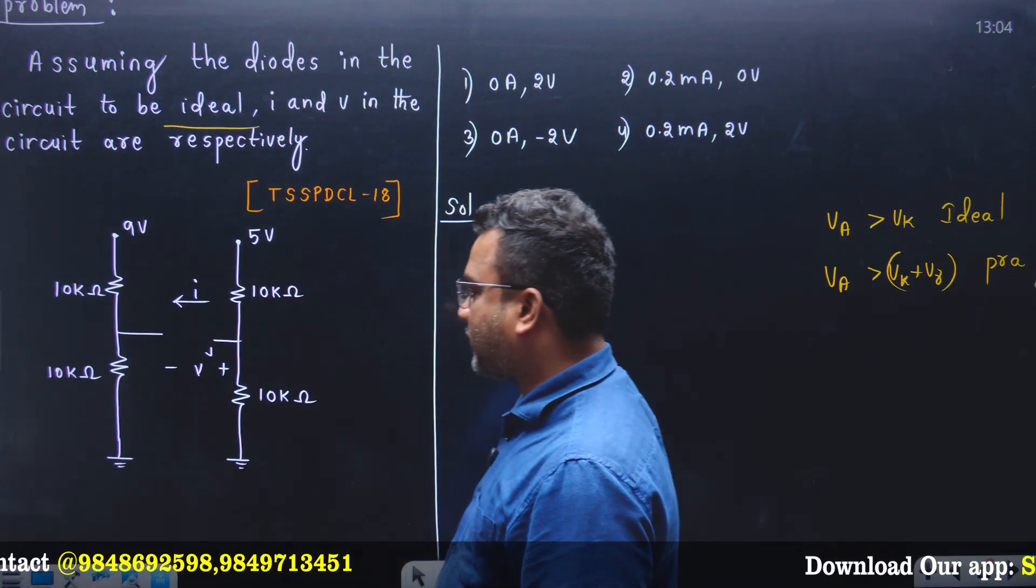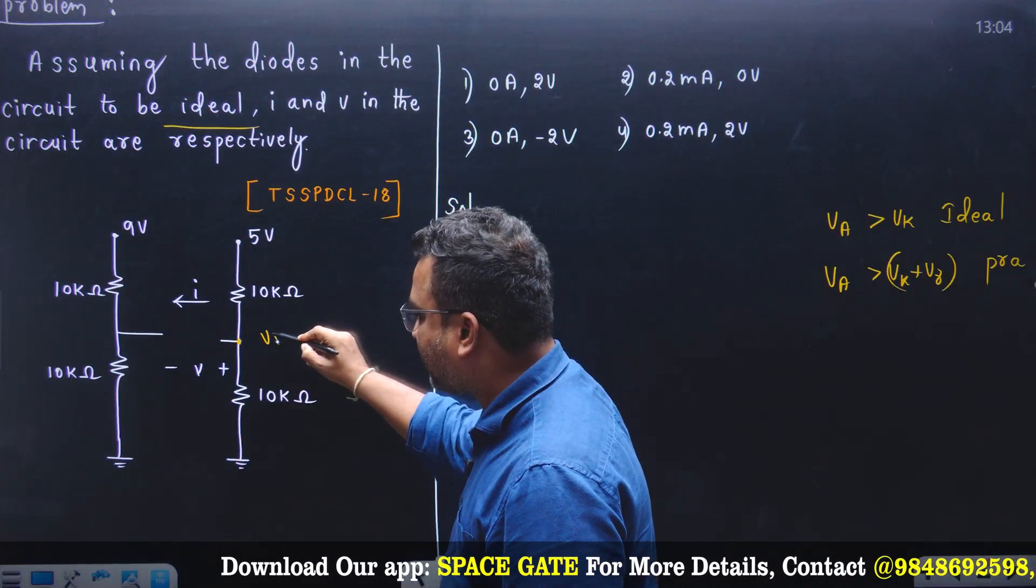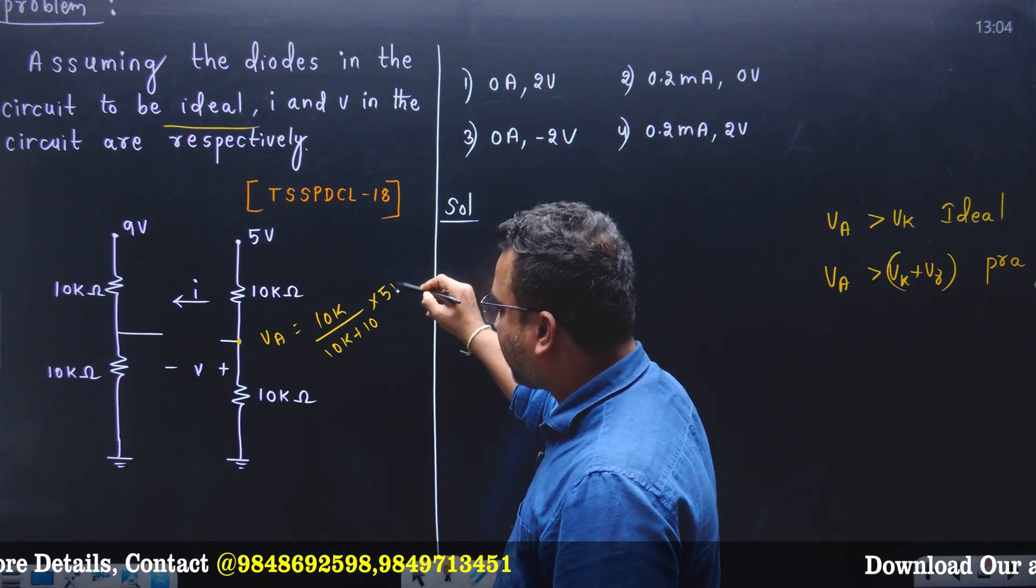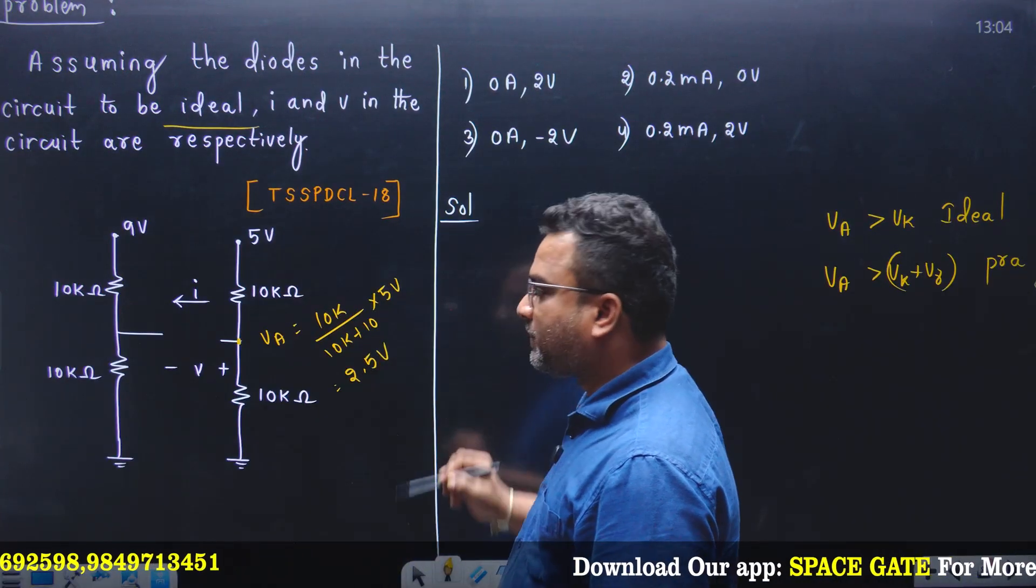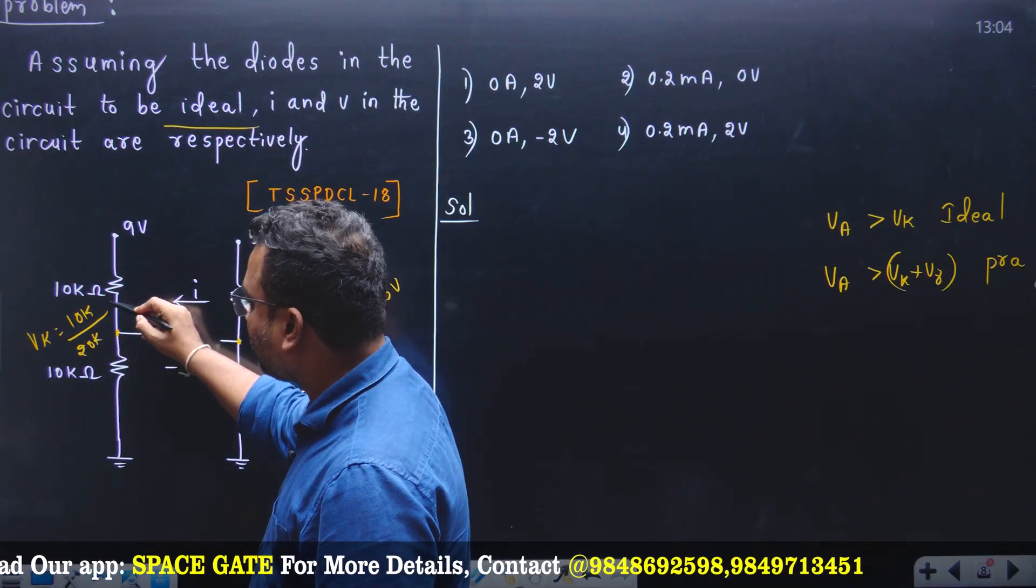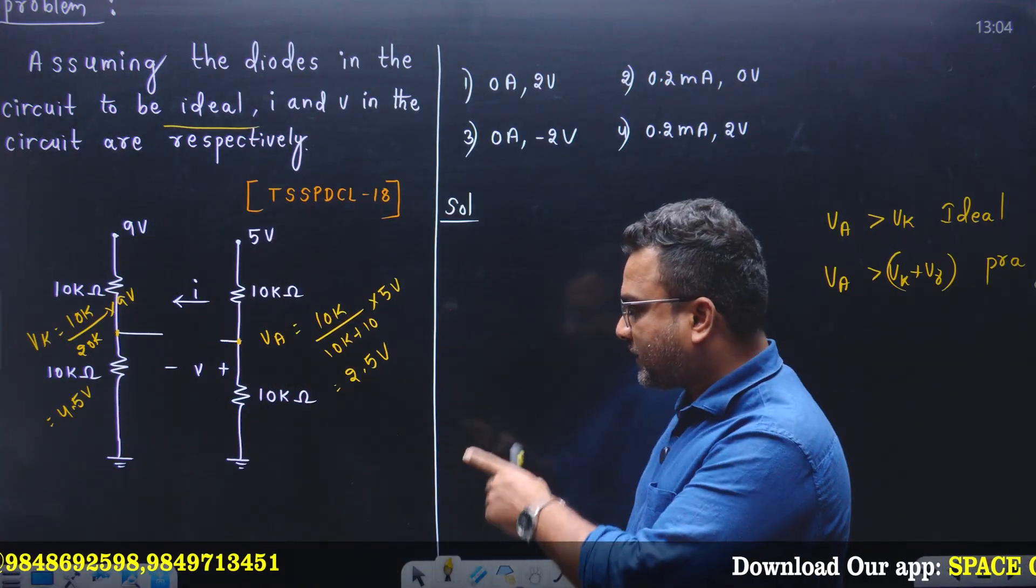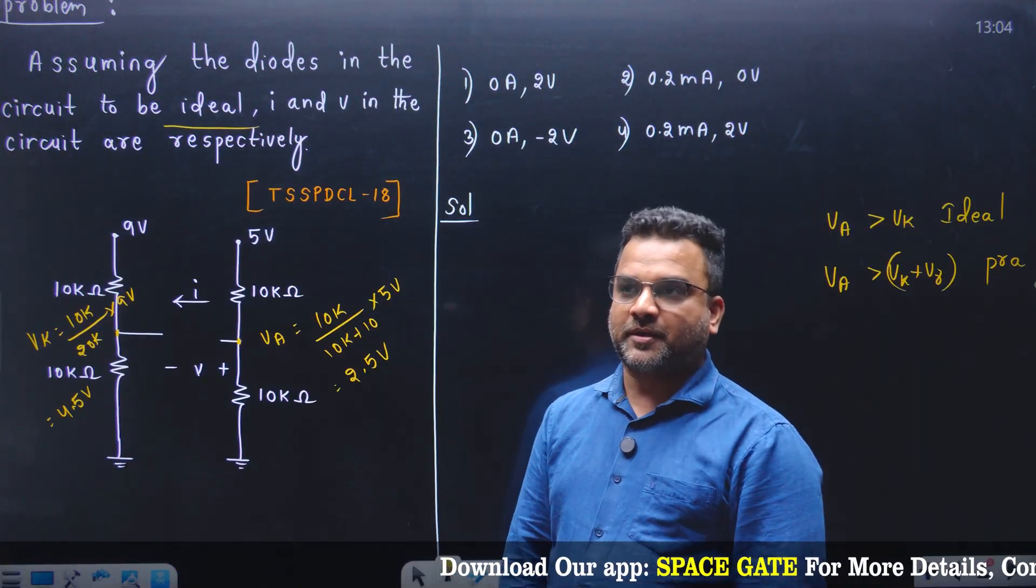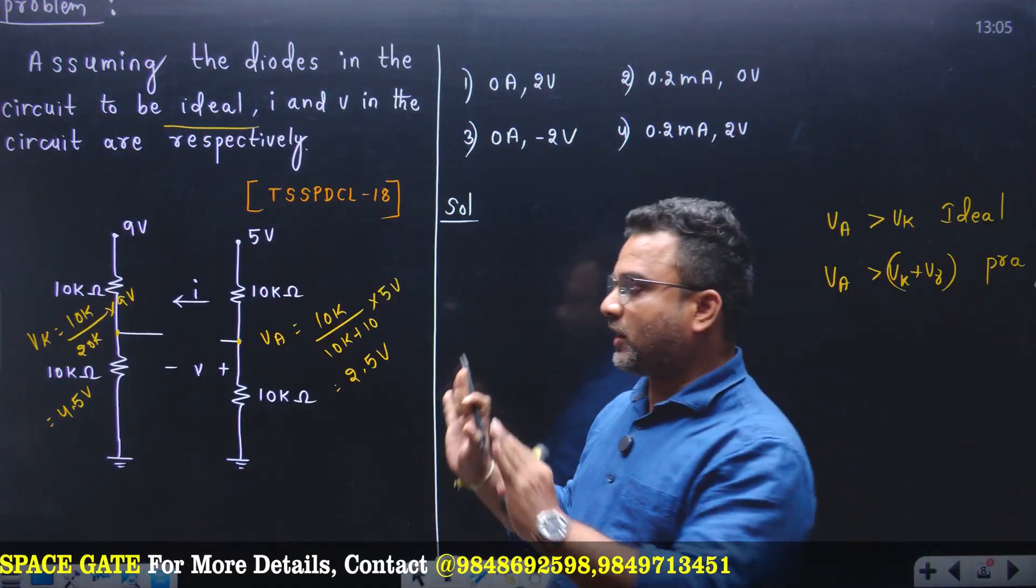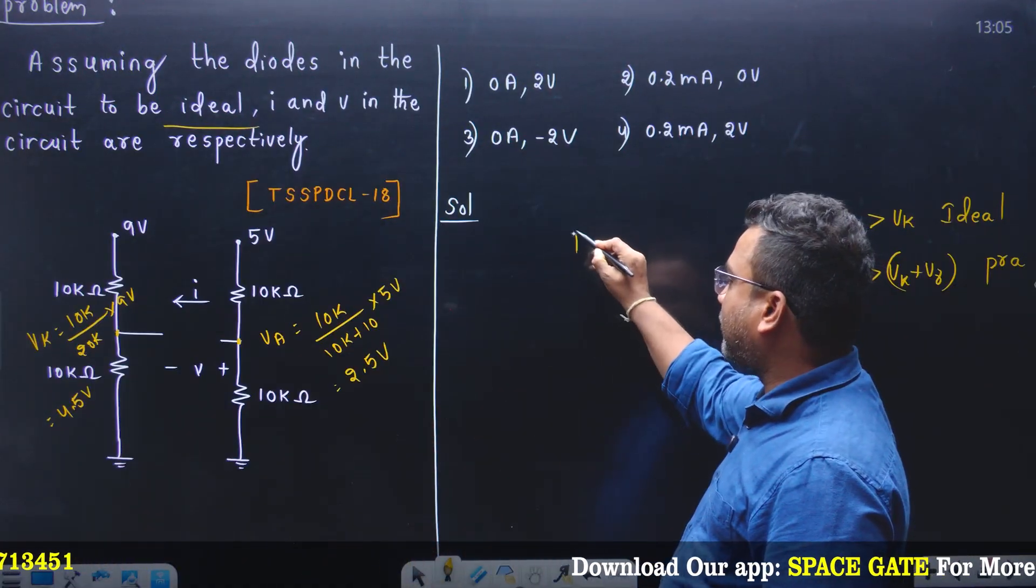What is the anode voltage? This is VA. Use voltage division principle: 10k by 10k plus 10k into 5 volts, then it is 2.5 volts. Similarly calculate the cathode terminal voltage VK, that is 10k by 20k into 9 volts, that means you will get 4.5 volts. Anode side voltage is 2.5 volts, cathode side voltage is 4.5 volts, so anode side voltage is smaller. Then diode obviously enters into reverse bias, diode is off.